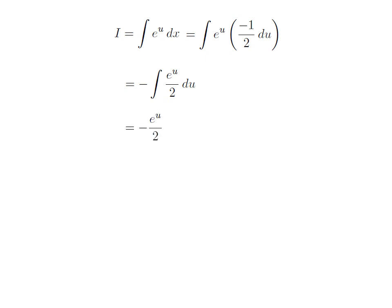This is a simple integration. 1 by 2 is the constant, and the integration of exponential of u is exponential of u. So, i is equal to minus half of e to the power u. We had solved the integration in terms of u. Now we need to take back the expression in terms of x. For that, I have replaced u by minus 2x, which we had assumed earlier.